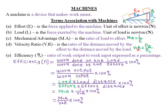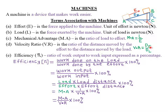Therefore, velocity ratio VR equals the effort distance DE divided by the load distance DL. Again, since velocity ratio is a ratio, the units cancel out and it has no units.